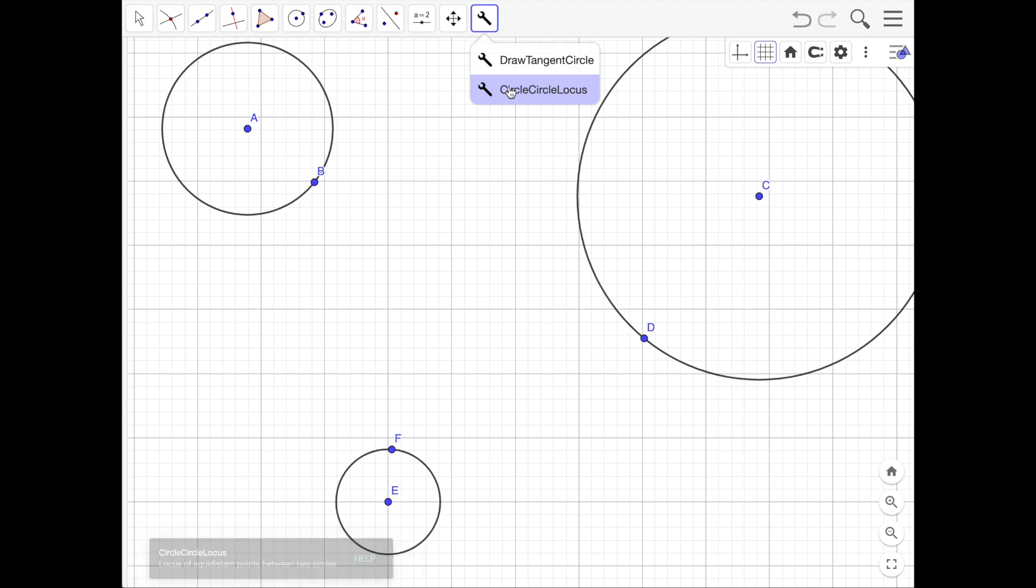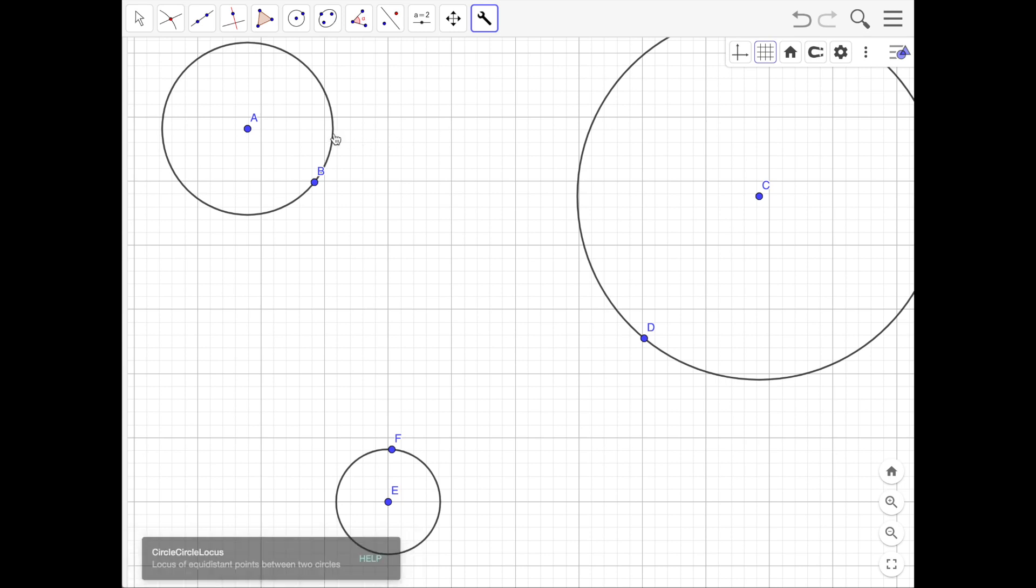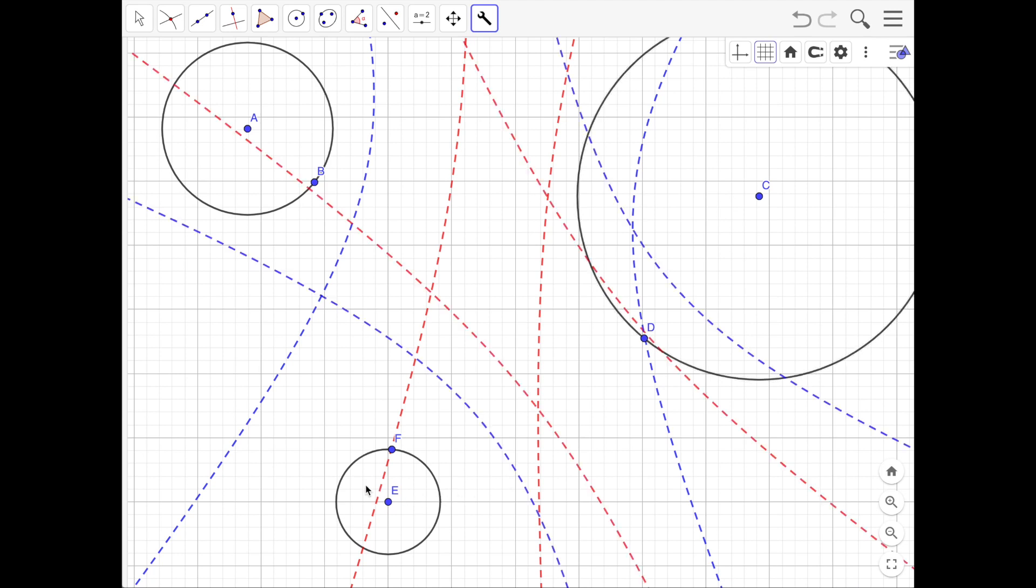So I've called it Circle Circle Locus. And what you do is you select two circles, and it'll draw the two corresponding conic sections. So let's just select that tool, choose these two circles, and great. We have the two hyperbolas that we expect. I can do the same thing for this pair of circles. And then finally, for this pair of circles.